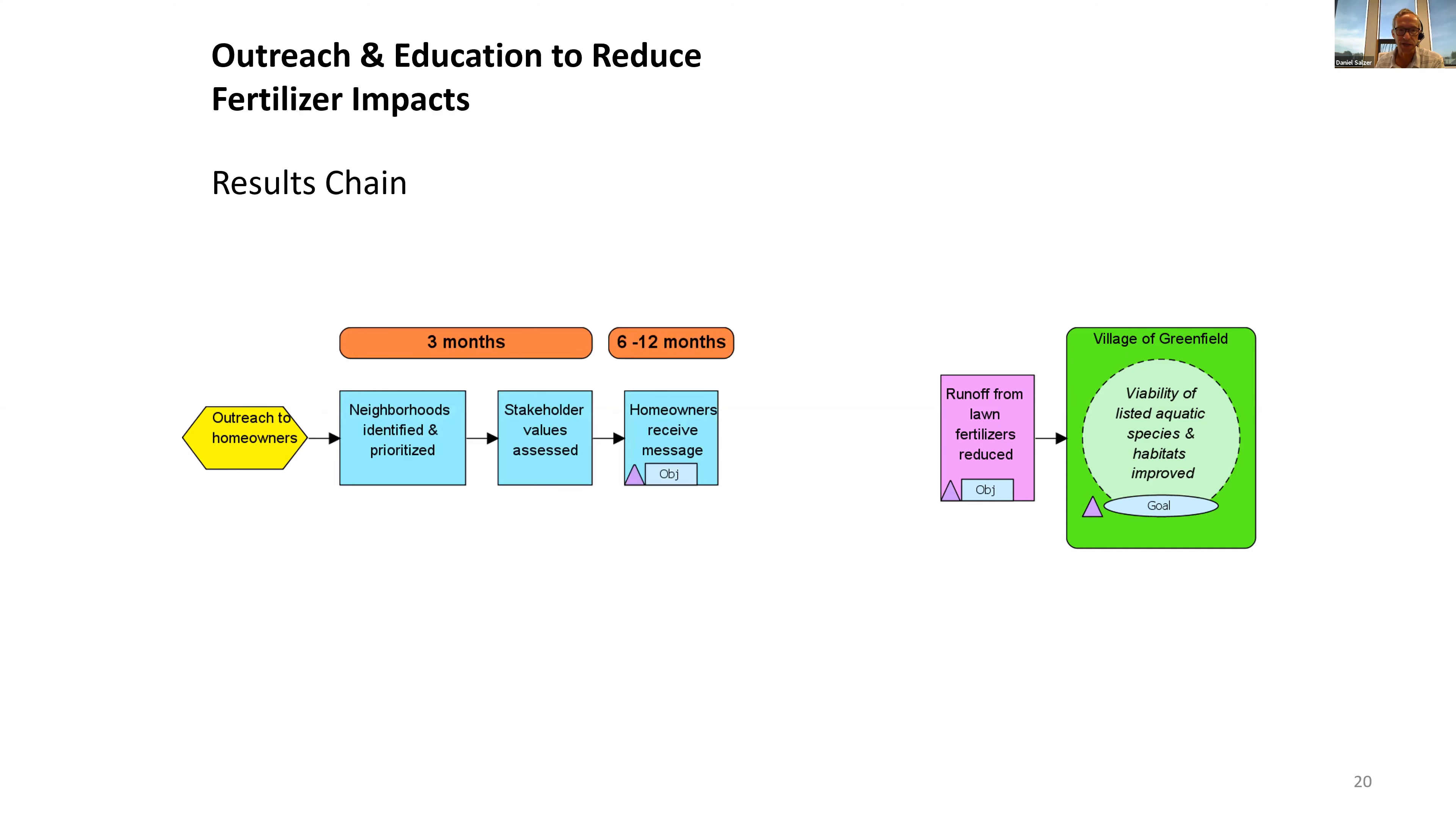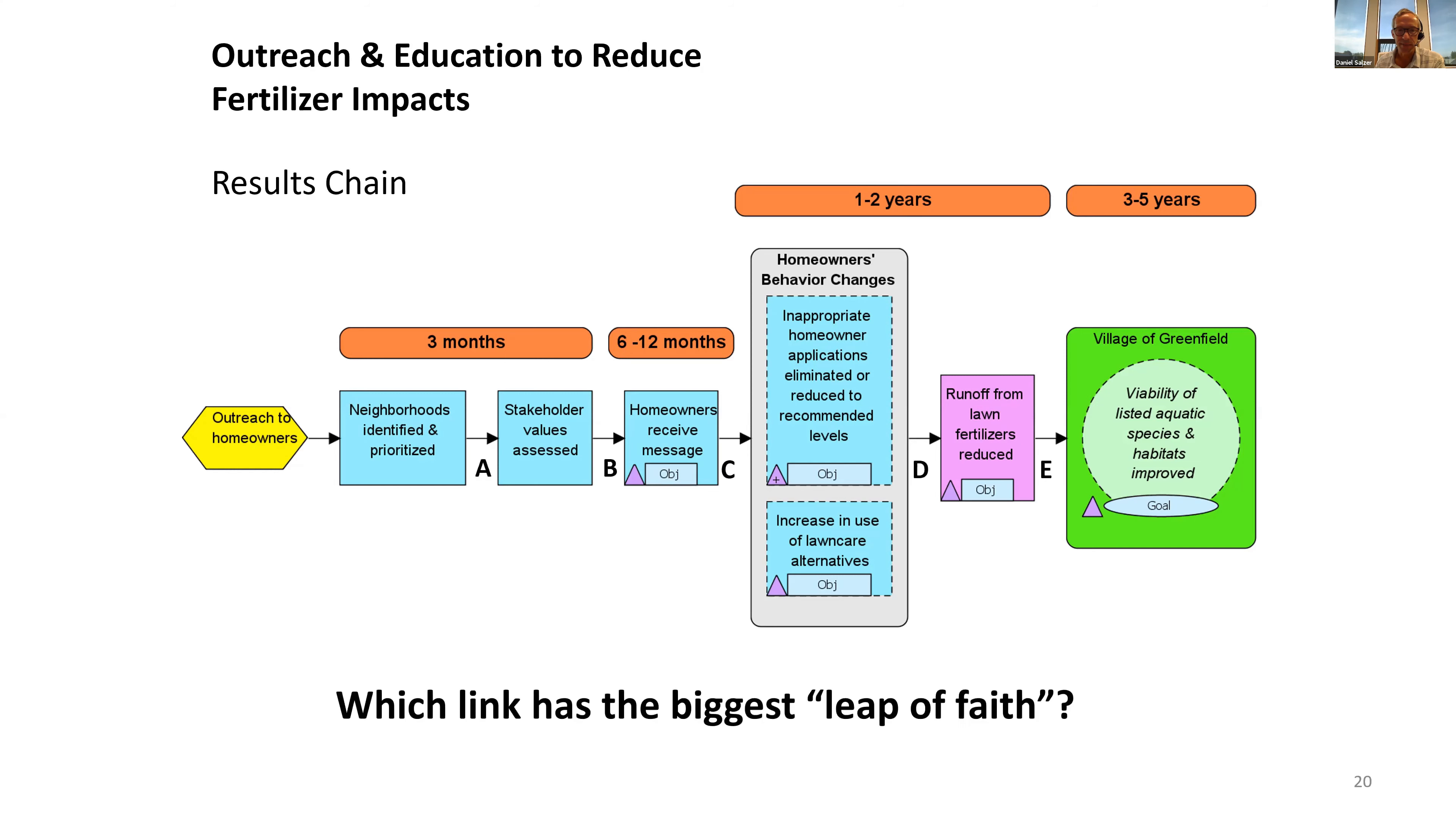We have the targeted viability or improved viability, threat abatement occurring on the right. You can make connections between the strategy, some near-term intermediate results the project team is trying to achieve, leading to other intermediate results—in this case, a behavioral change that will take you to that threat abatement.